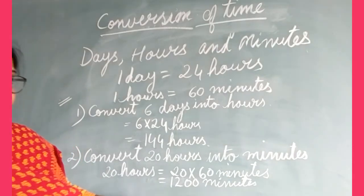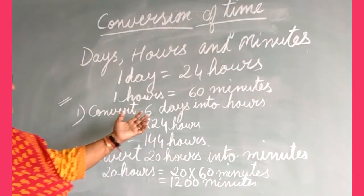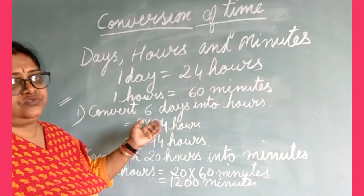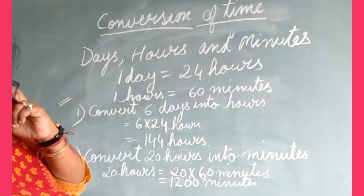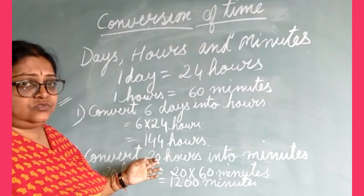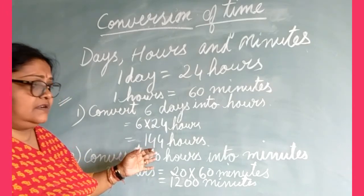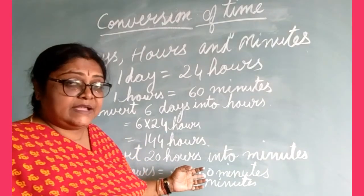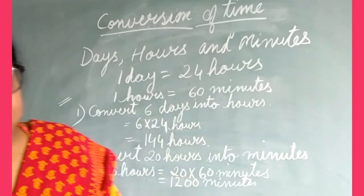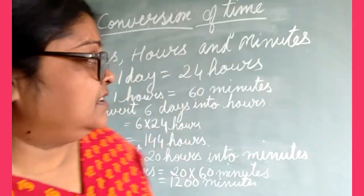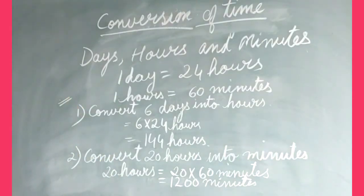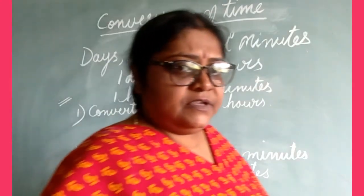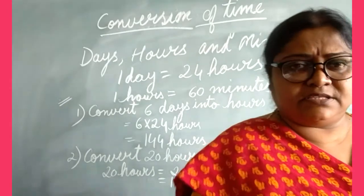Like this, if any question comes where a number of days must be changed into hours, just multiply that number by 24 and you will get the hours. If hours must be changed into minutes — 20 hours, 30 hours, 10 hours — multiply by 60 and you will get the answer in minutes. Thank you everyone.